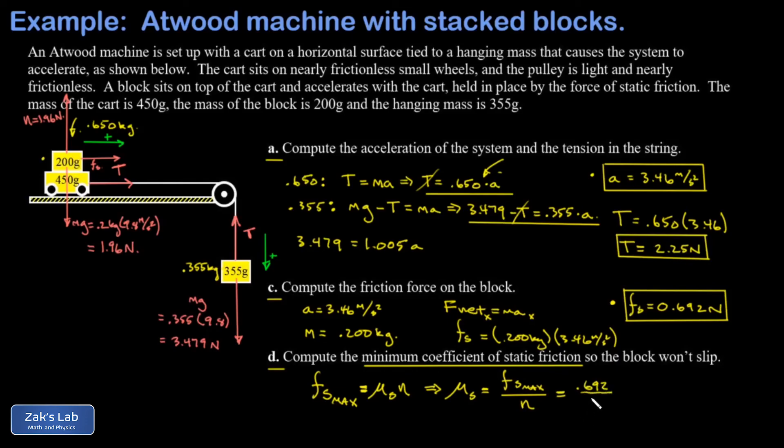So now we can solve for the coefficient of static friction. So that's going to be 0.692 newtons. And the normal force was already computed. That's 1.96 newtons. And I get a static friction coefficient of 0.0353. But the reason this is the minimum static friction coefficient is